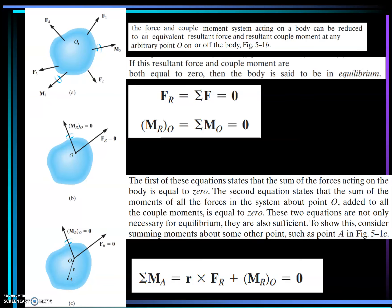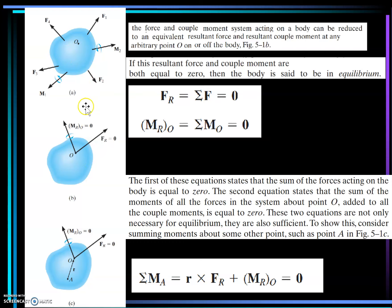Let's get to the topic we are interested in. If you have any arbitrary body subject to forces F1, F2, F3, and F4, and moments M1, M2, and M3, how can we say that this is in equilibrium? You have to satisfy that the sum of forces is zero, and the sum of moments at any point — say point O — is zero as well. If the resultant force is zero and the resultant couple or moment is zero, then this rigid body is in equilibrium.